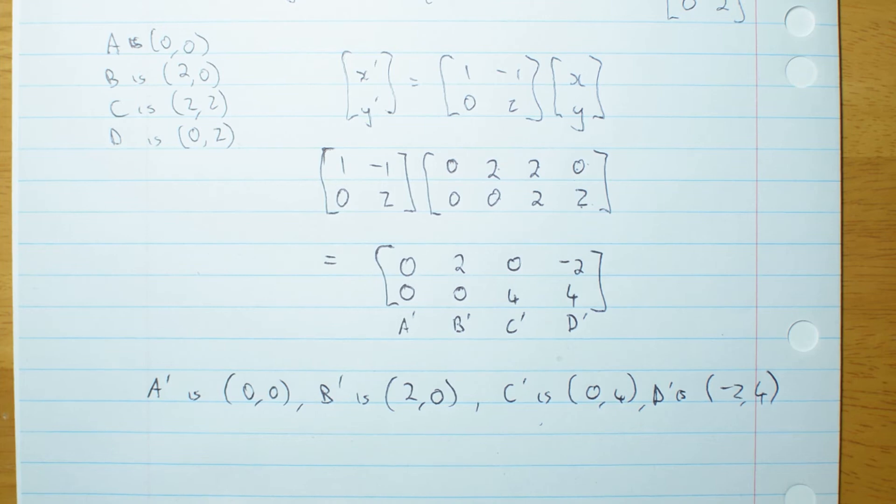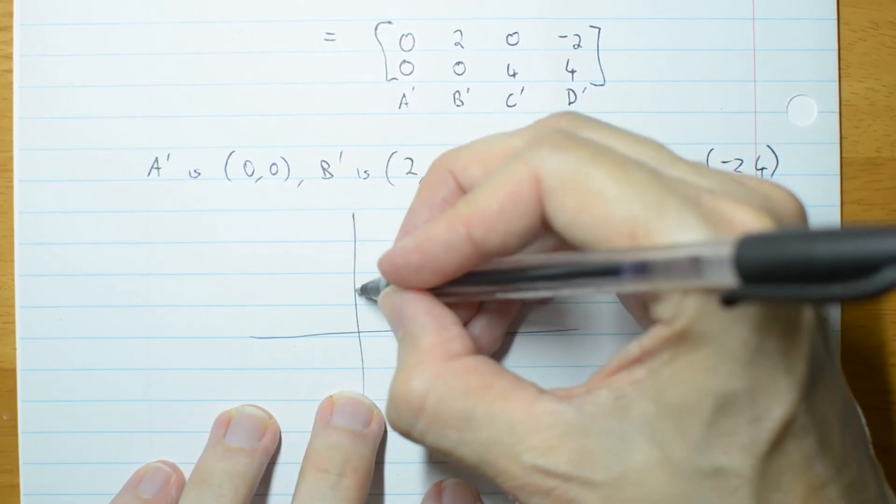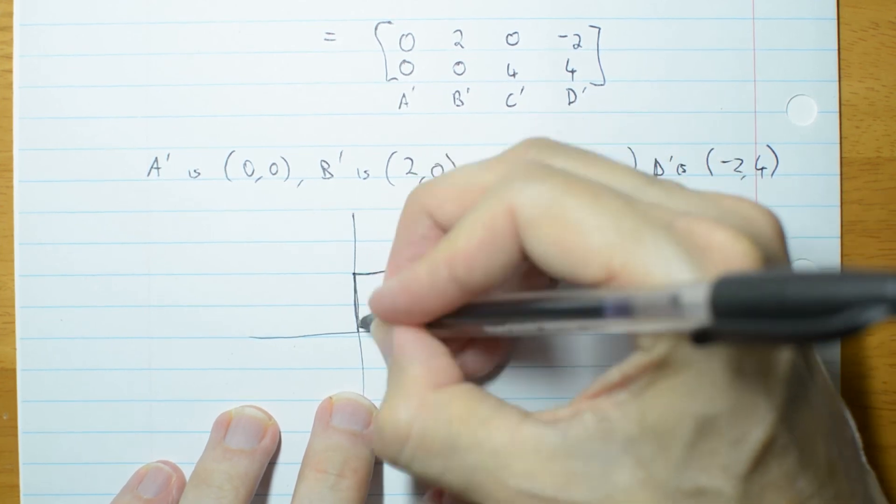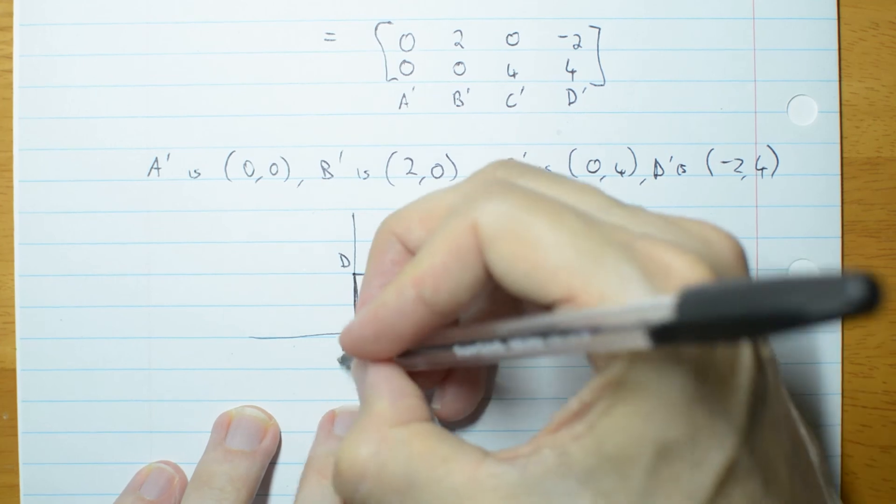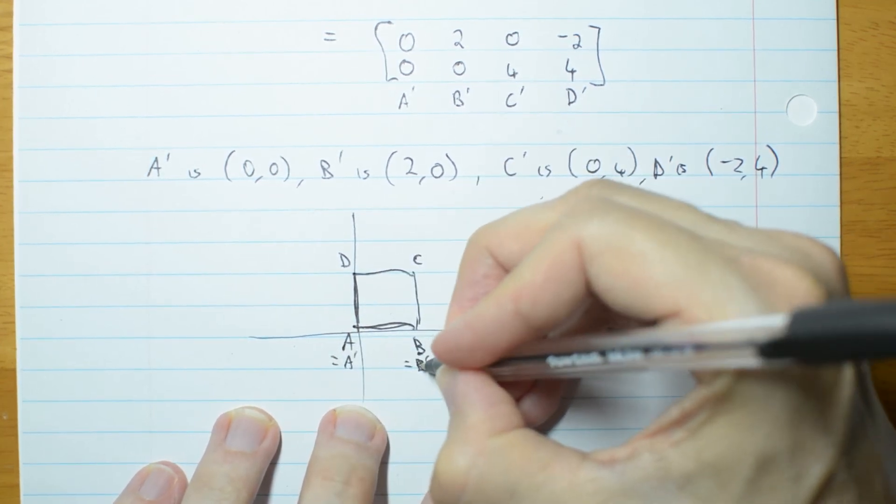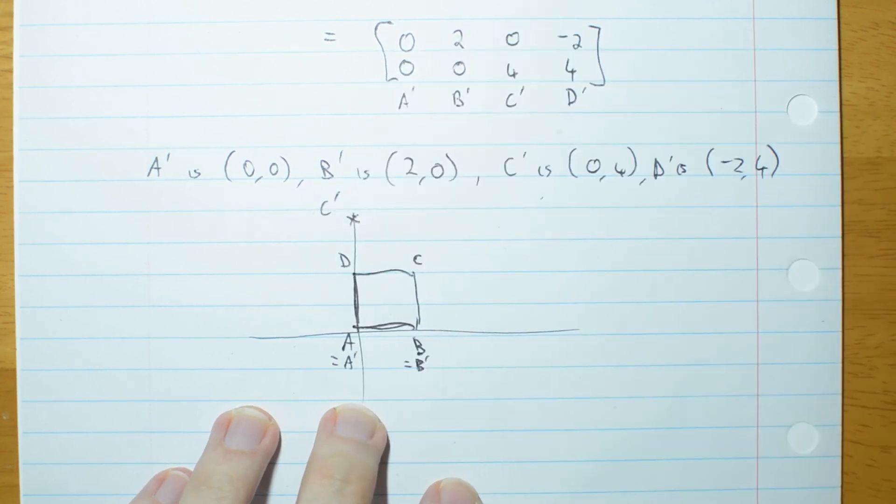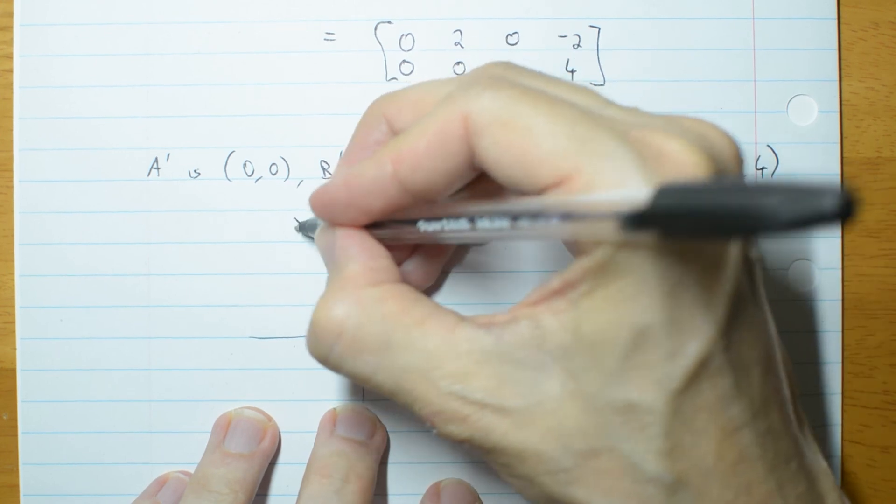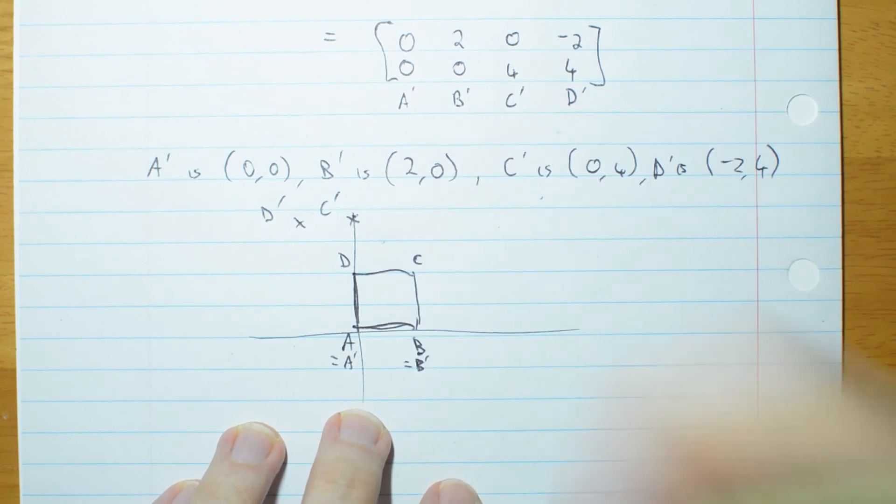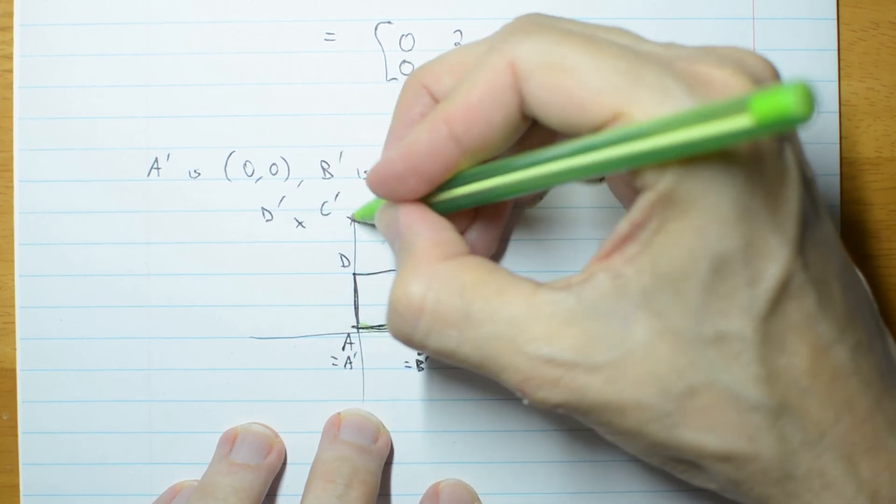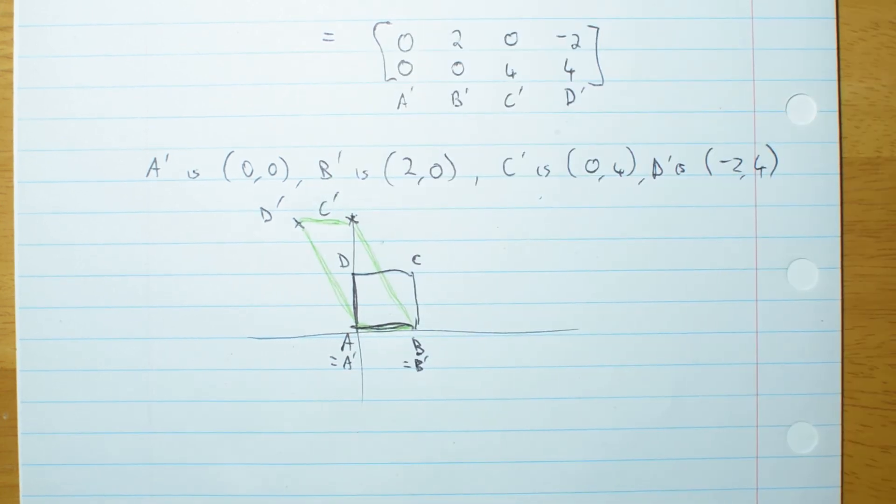So where has that square actually ended up? Let's quickly sketch. It was here. Should have used a different colour. That was A, B with (2, 0), C, D. This is also A primed and B primed. But C primed is (0, 4). That's C primed. And D primed is (-2, 4). So my square now goes A primed, B primed, C primed, D primed. It's no longer a square, it's now a parallelogram.